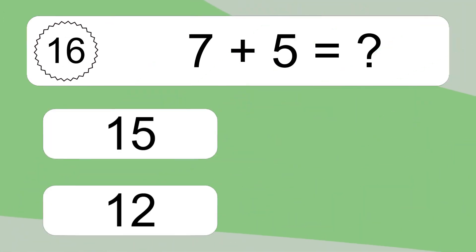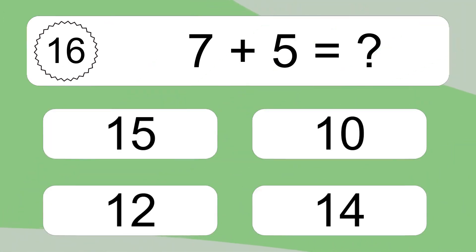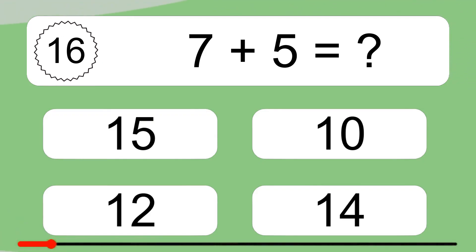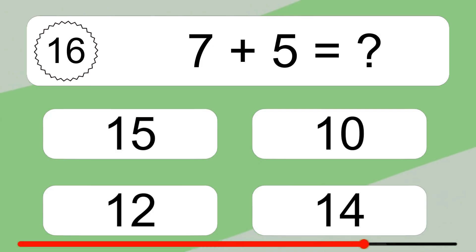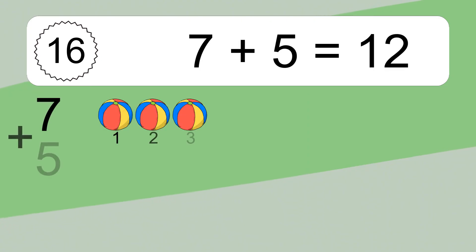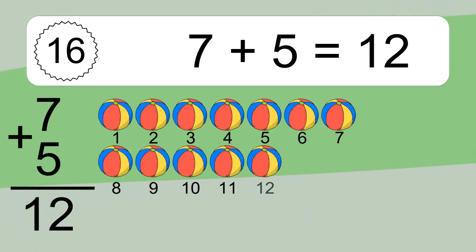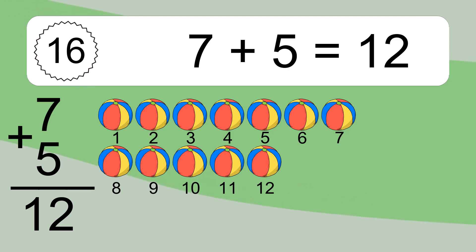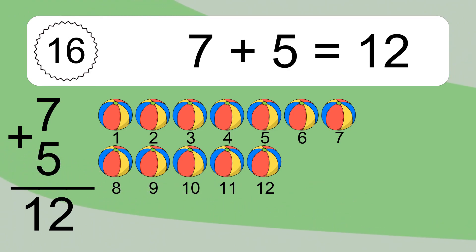Seven plus five equals what? Seven plus five equals twelve. Let's count it: one, two, three, four, five, six, seven, eight, nine, ten, eleven, twelve.